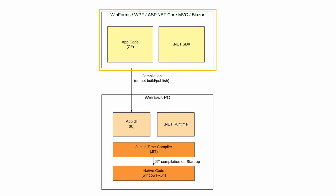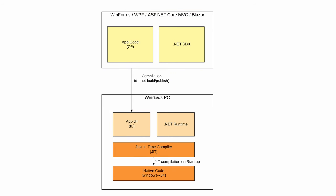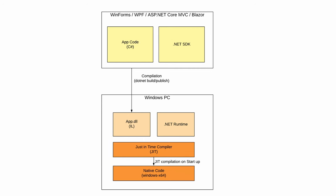For example, a WinForms or WPF application is compiled to IL code on a developer PC and executed on another computer, which uses the JIT to compile the IL code into Windows x64 native machine code.